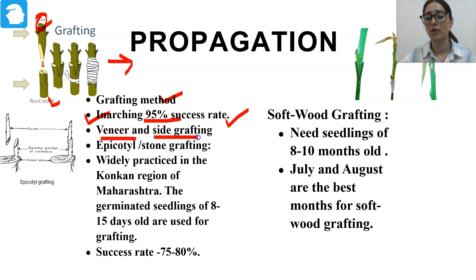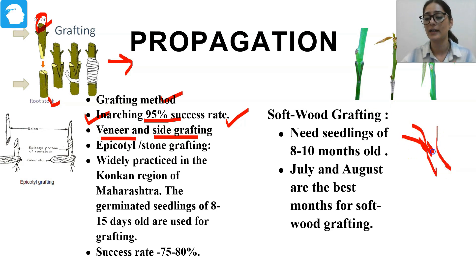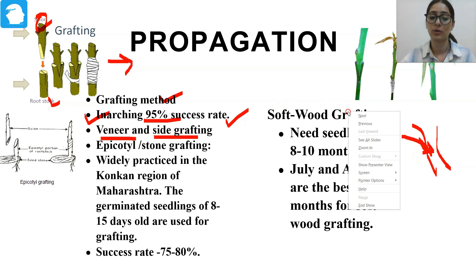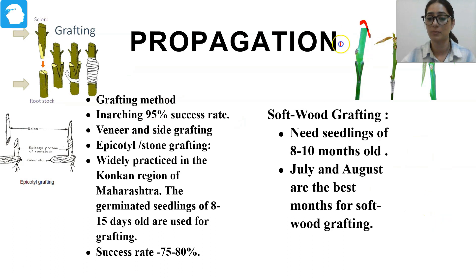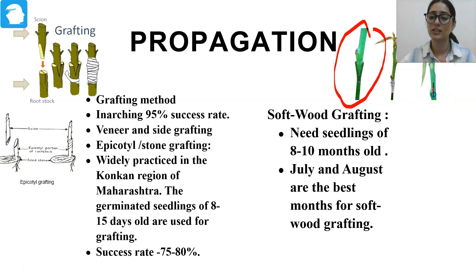Vineyard grafting, also called side grafting — what we do in side grafting is we put a cut on the main branch and insert the scion into this cut, and then it grows into a new plant. That's why it is called side grafting. You can see in this picture — this is the main branch, we insert the scion here, and it is combined with the rootstock. That is called vineyard grafting.